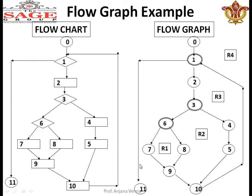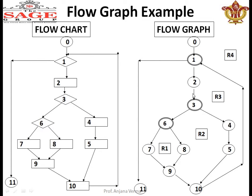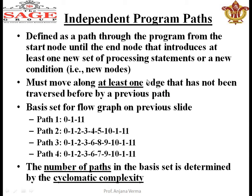The start node is zero and the end node is eleven. Path one: 0-1-2-3-6-7-9-10-11. Path two: 0-1-2-3-6-8-9-10-11. Path three: 0-1-2-3-4-5-10-11. This is how we identify independent paths by testing different routes through the flow graph.